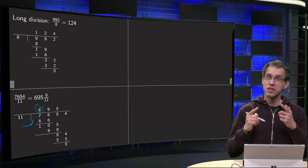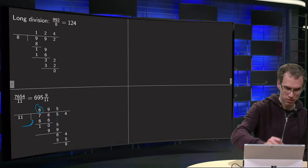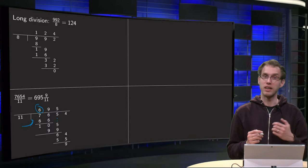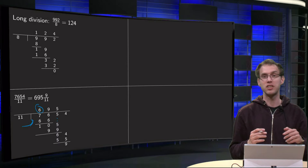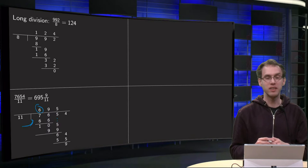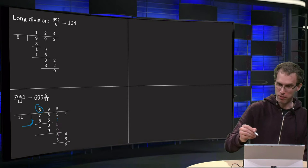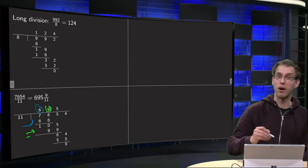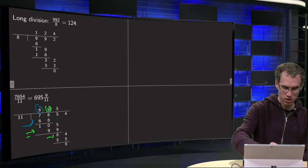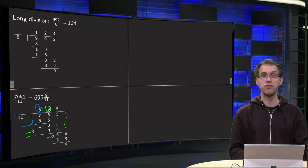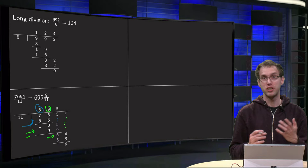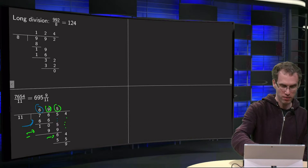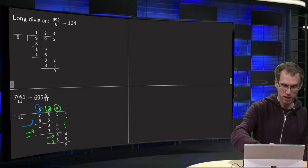Then you subtract: 76 minus 66 equals 10, and you bring down the 5 to get 105. Then 105 divided by 11 — 9 times 11 equals 99, and 10 times 11 would be 110 which is too much. So we have 9, giving 99 here. Subtract: 105 minus 99 equals 6. Bring down the 4 to get 64. How many times can we get 11 into 64? 6 times 11 equals 66 is too much, but 5 times 11 equals 55 fits, so we write 5 and end up with a remainder of 9.